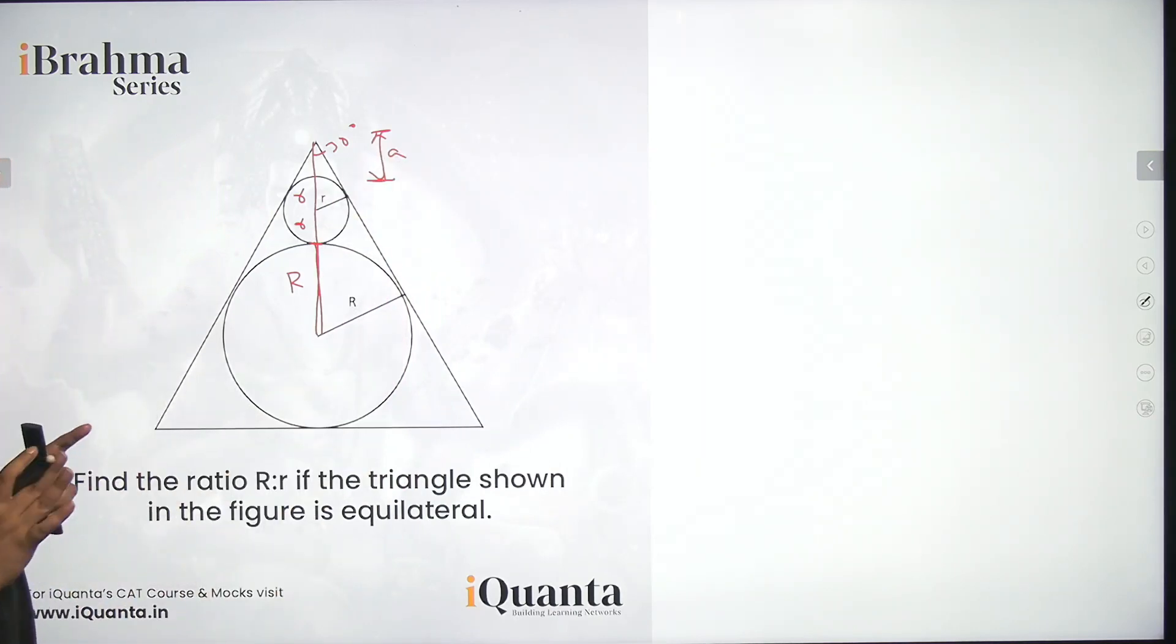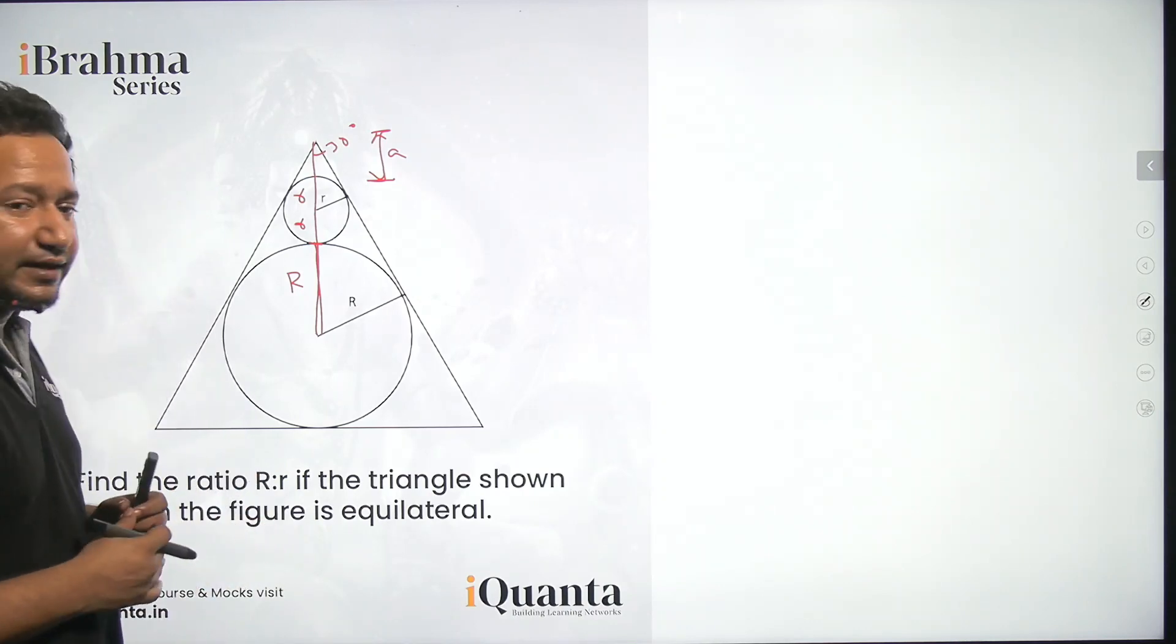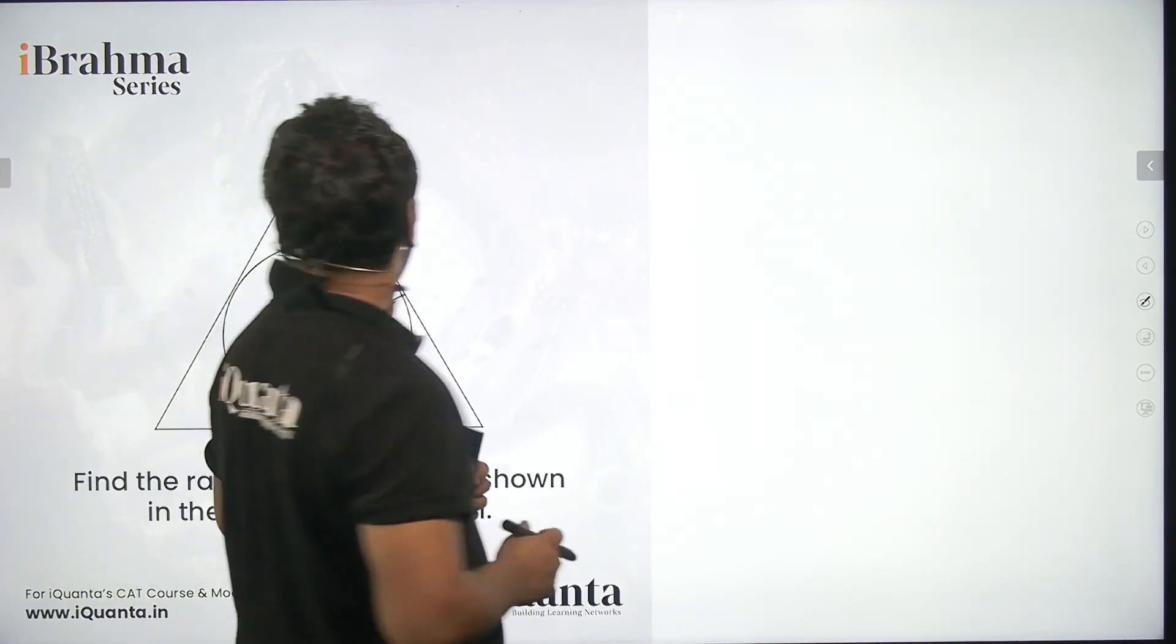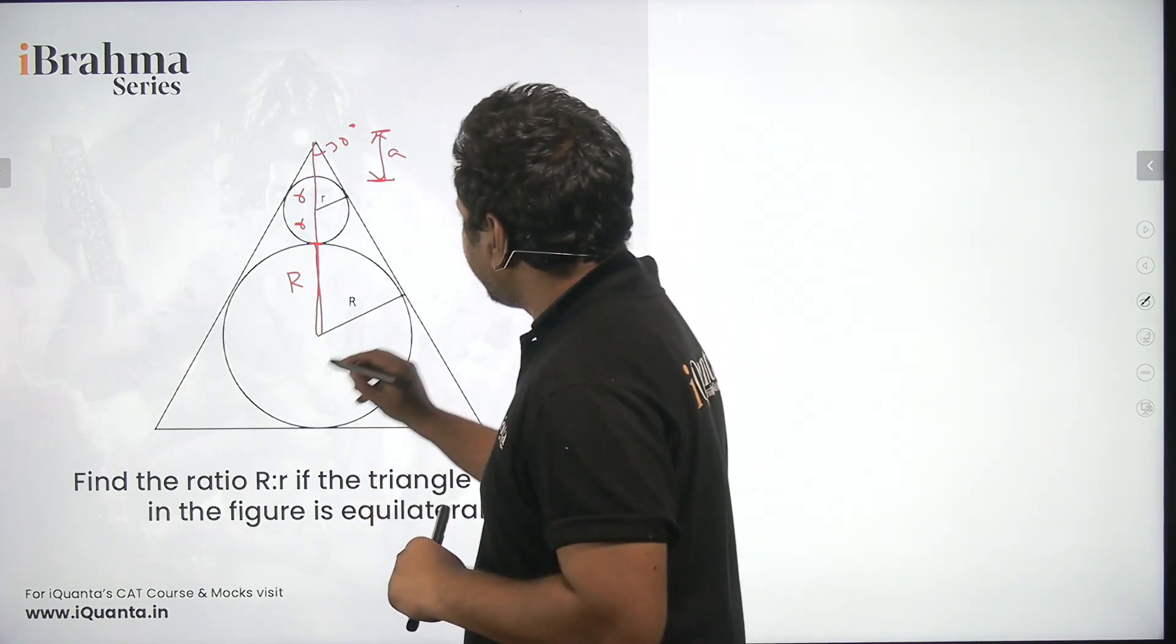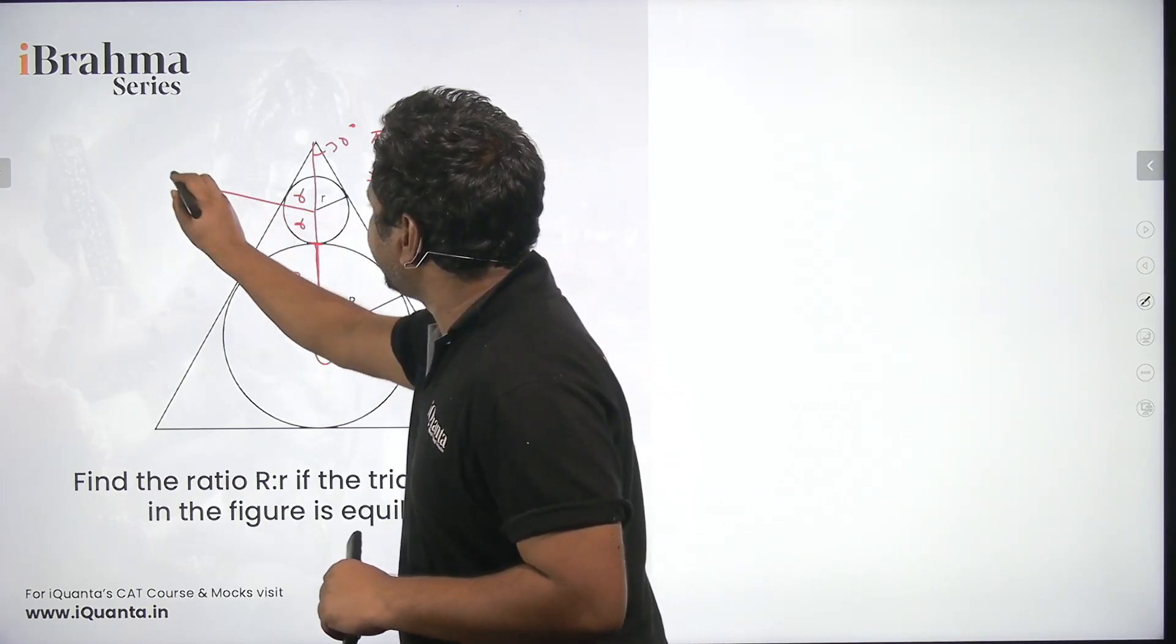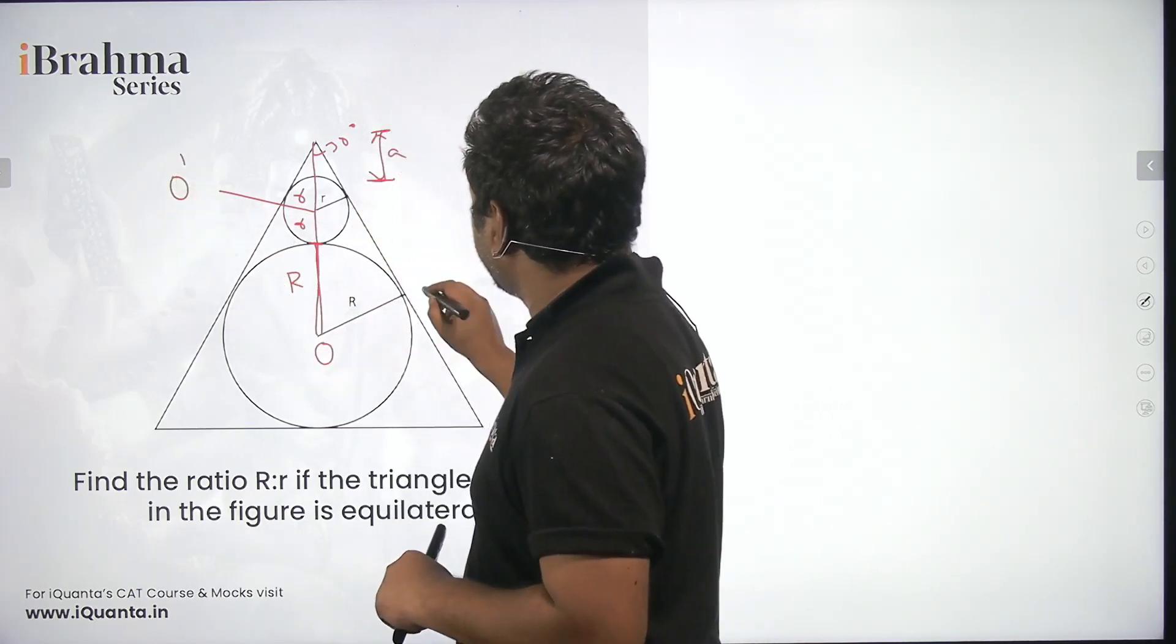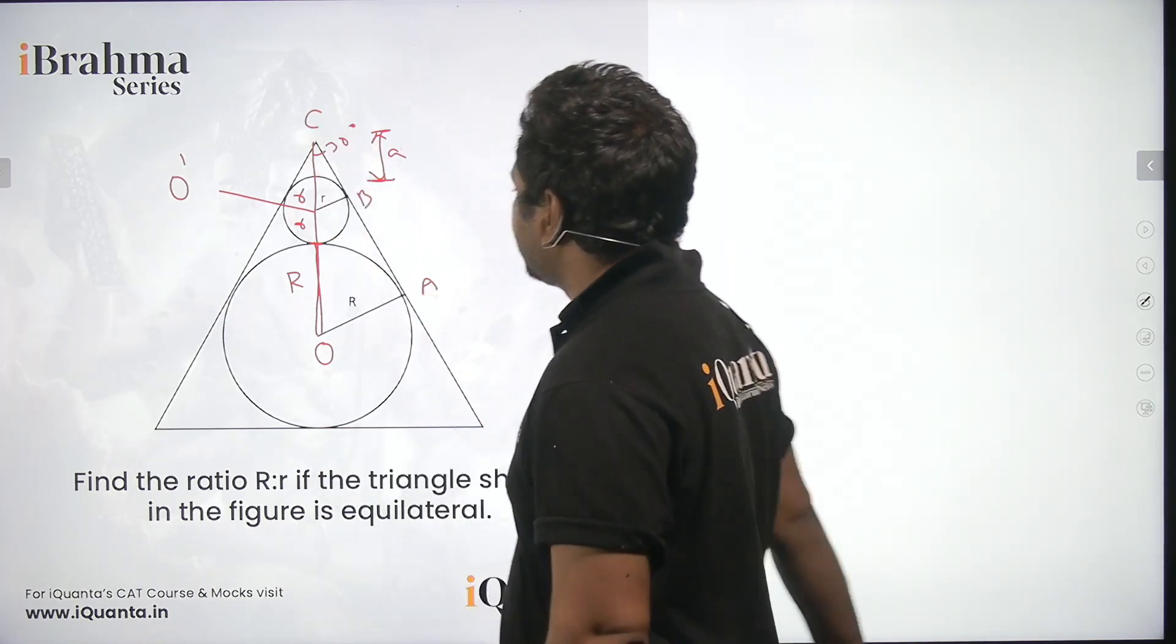Now we are done with this and now we will use some trigonometric ratios and we'll get our answer. So just for the sake of understanding let me call this center O and this center O dash, let this be A, this be B, and this be C.